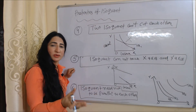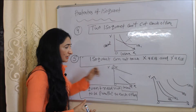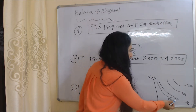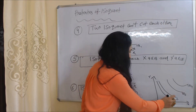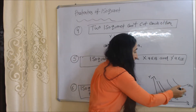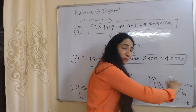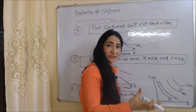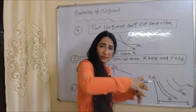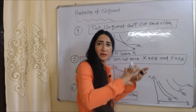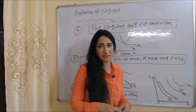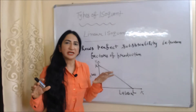The last property is that isoquants need not be parallel to each other. In this diagram, IQ1 and IQ2 are parallel to each other, but IQ3 and IQ4 are not, because it is not necessary for isoquants to always be parallel — it all depends on the marginal rate of technical substitution.